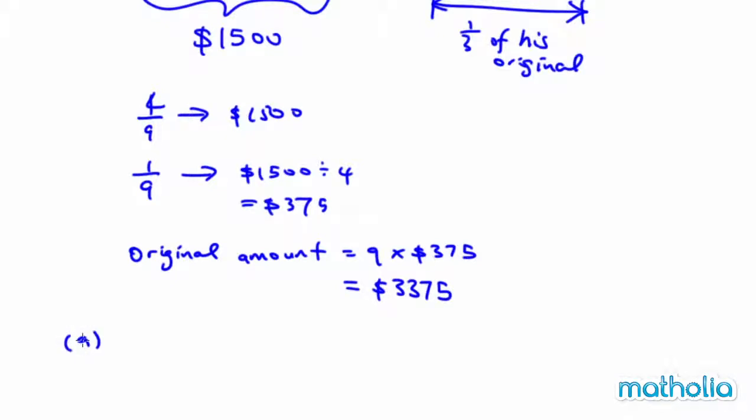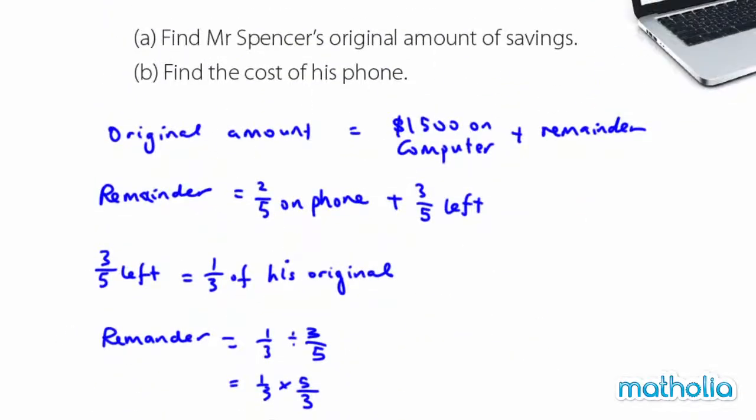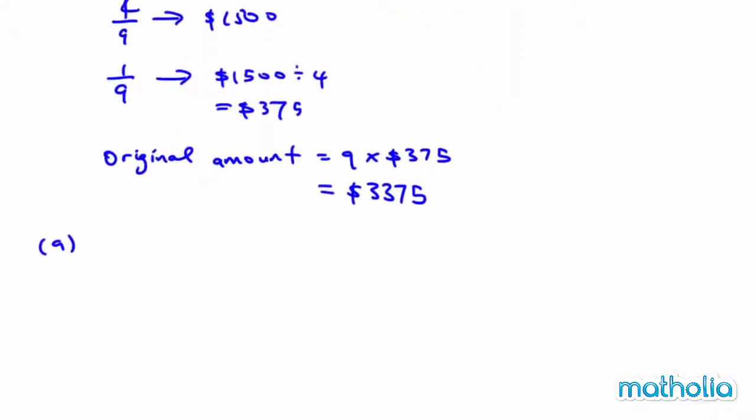Then you can answer the question. Find Mr. Spencer's original amount of savings. So, we'll say Mr. Spencer's original savings was 3,375.